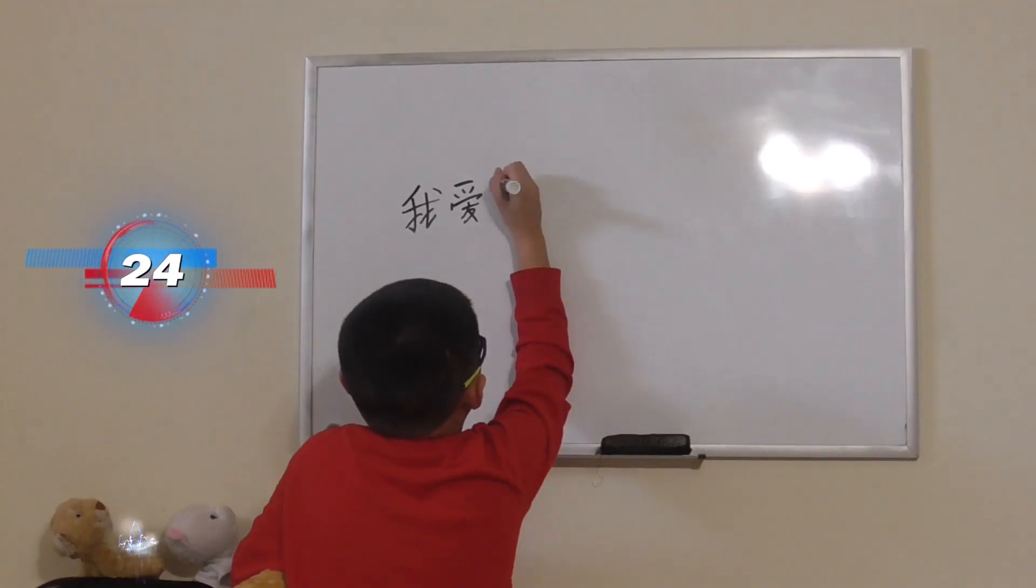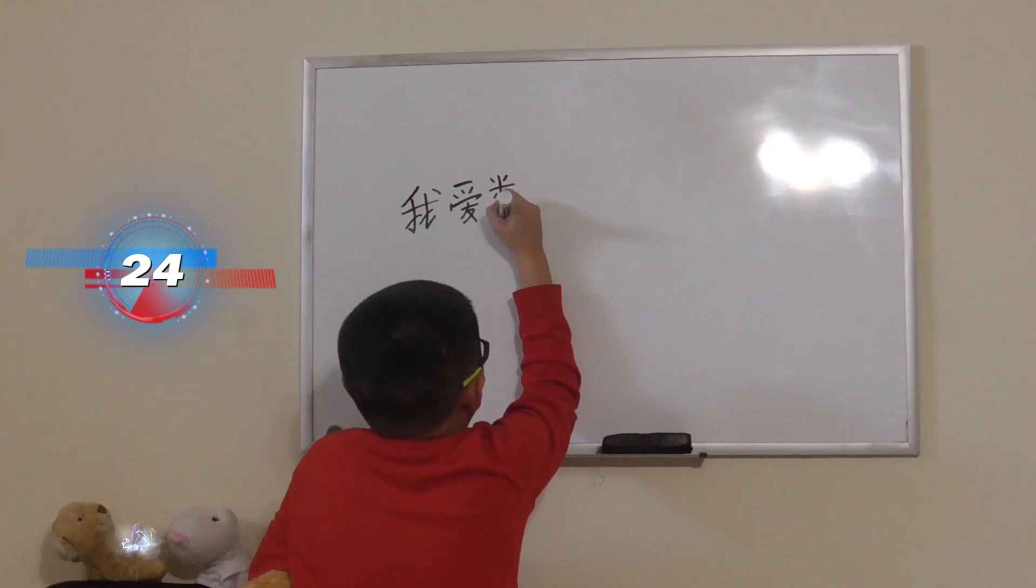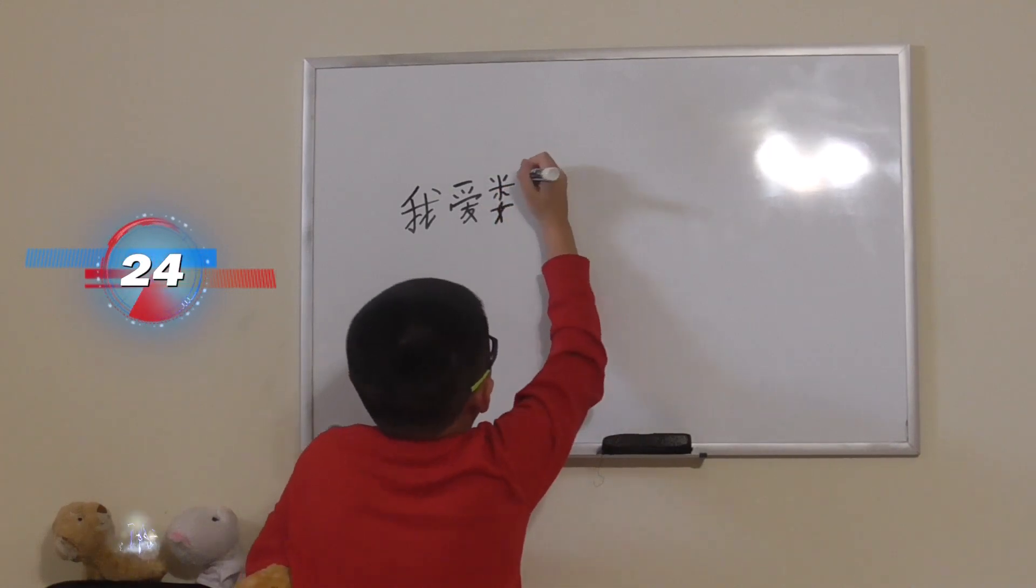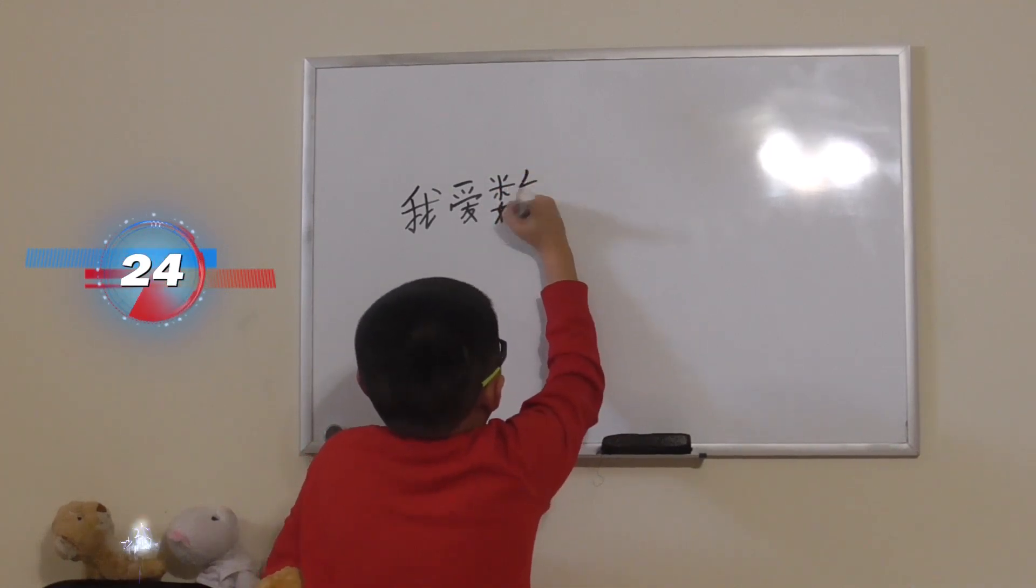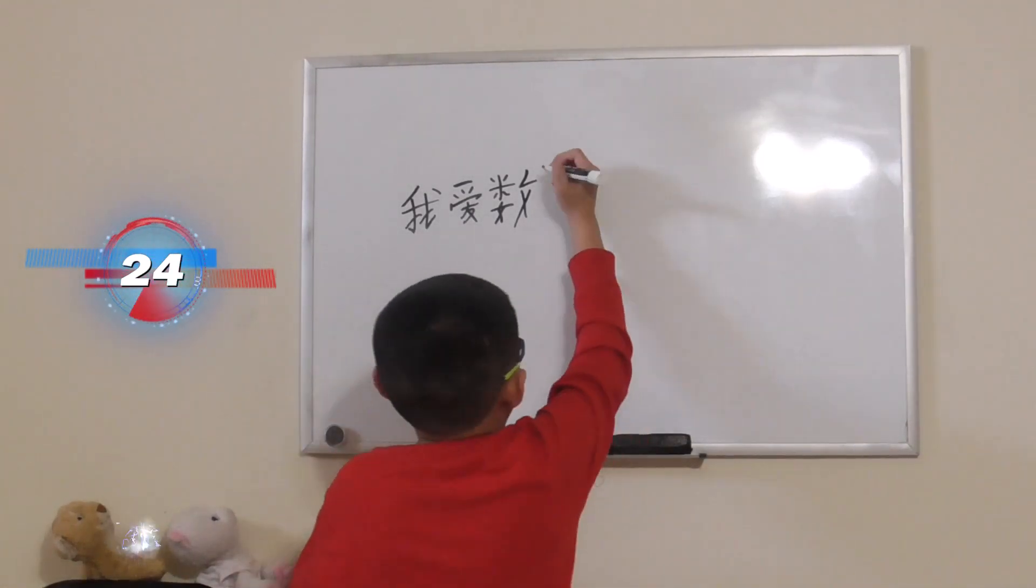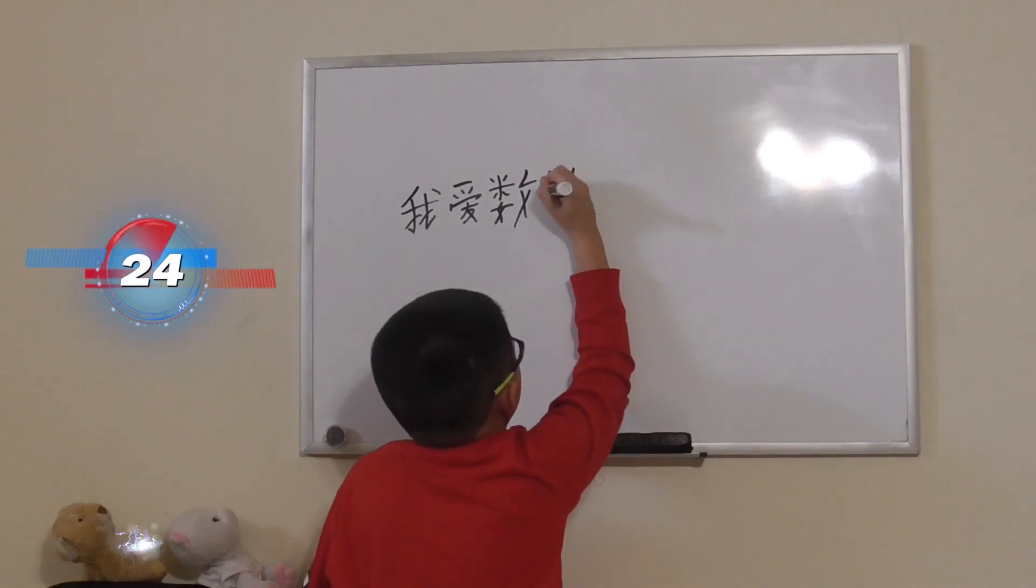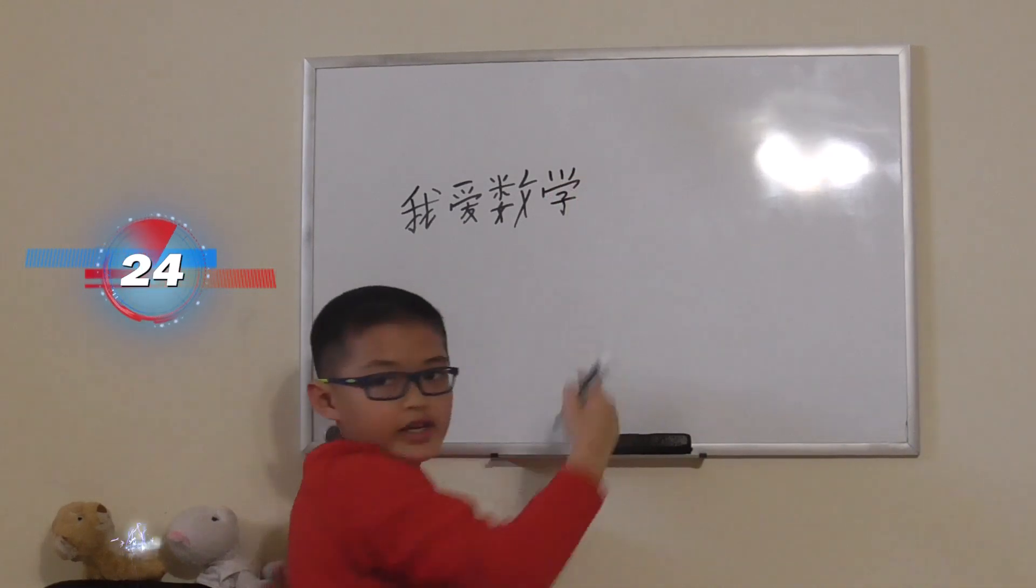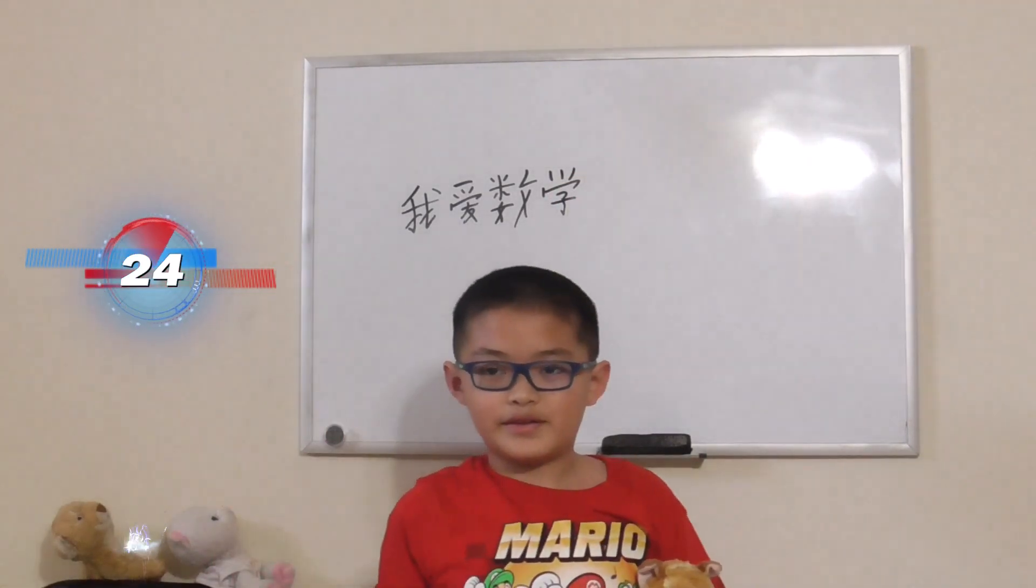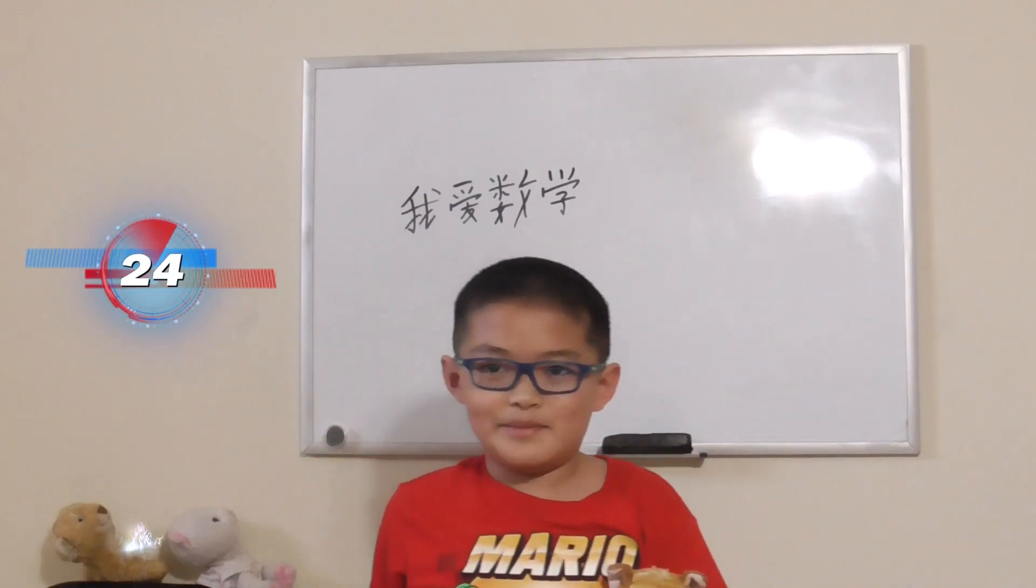数, Shu means number. And then, 学, Shu means discipline. So discipline of numbers is math.